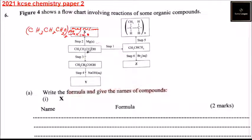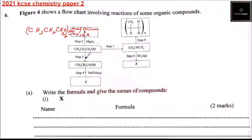From there we go to Step 3. This is propanoic acid. So what happens in Step 3 is we change propanol to propanoic acid by the process we call oxidation.